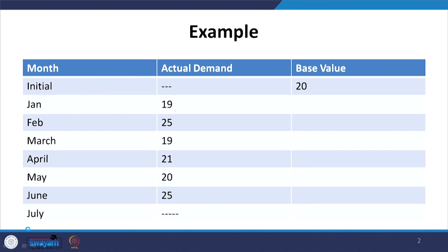In this table, we have the data of past six months from January to June. We want a forecast for July. You have actual demand data for these six months, and with the help of this actual demand data, we can forecast for July. We have already seen how we can use simple moving average and weighted moving average methods, where we take the average of some most recent periods according to our choice of moving average.